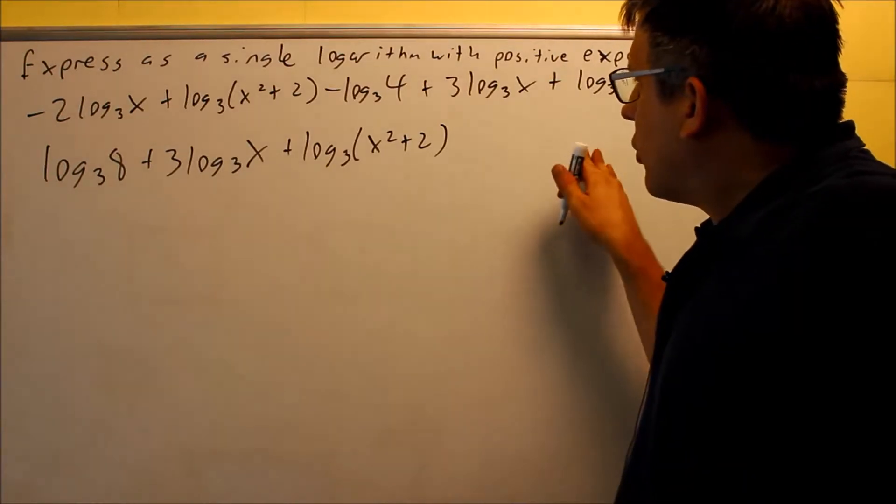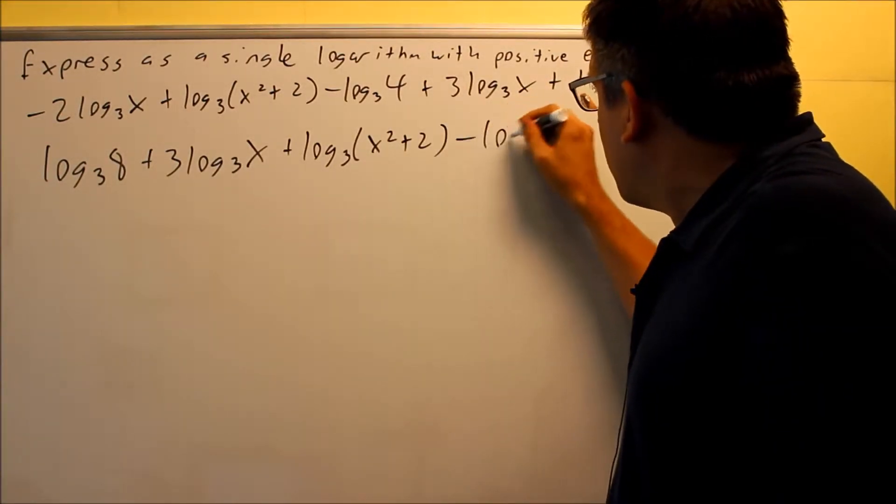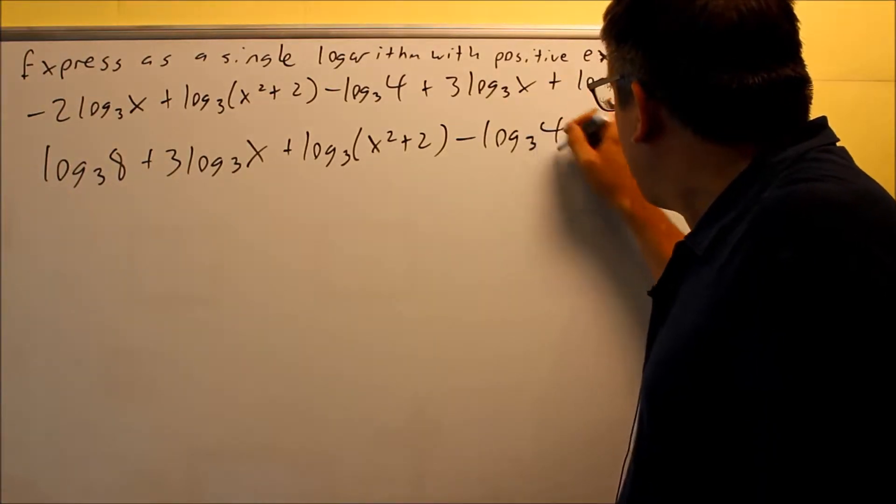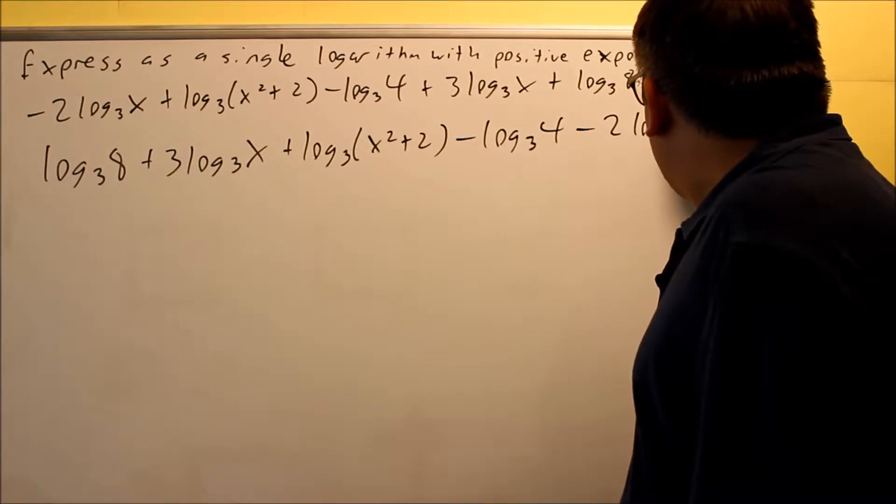Okay, then next I want to put the ones with the negative sign in front. So again, the order doesn't matter. I'll start with this one, minus log₃ 4, and then I'll do that one, minus 2log₃ x.